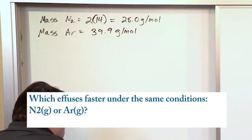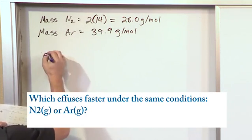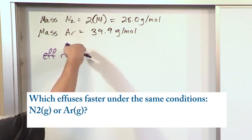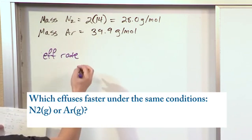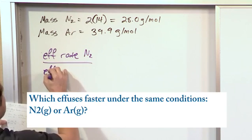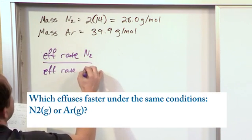Now, we already learned from before that the effusion rate, normally we write it as gas 1 and gas 2, but now we know what the gases are. So, I'll write it as effusion rate of N2 over the effusion rate of argon.